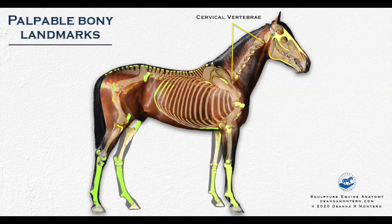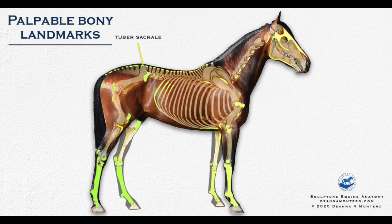the transverse processes of the cervical vertebra, the spine of the scapula, the tuber sacral, tuber coxa — just some for example. It's important to have an understanding of all the bony landmarks within the body because it provides us with an understanding of a healthy skeleton.